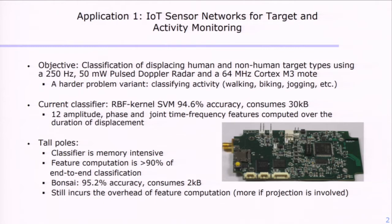Through analysis of the cuts, we have traditionally designed some engineered features in amplitude, phase, and joint time-frequency domain over the duration of the displacement. For detection of objects such as humans, cows, cars, etc., we have traditionally relied on an RBF kernel SVM using 12 features, down-selected from a bigger list of 90 or 100 features.